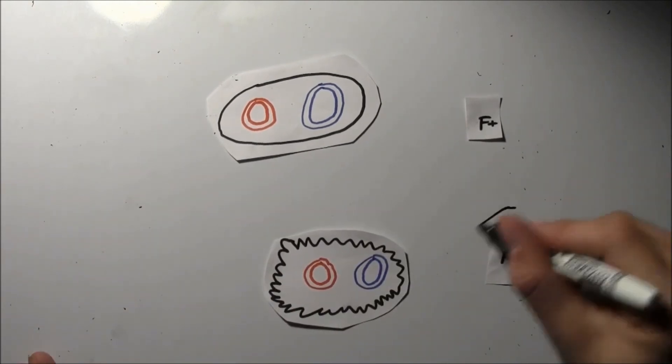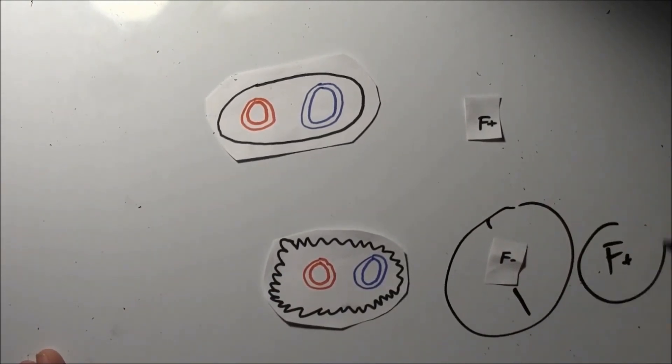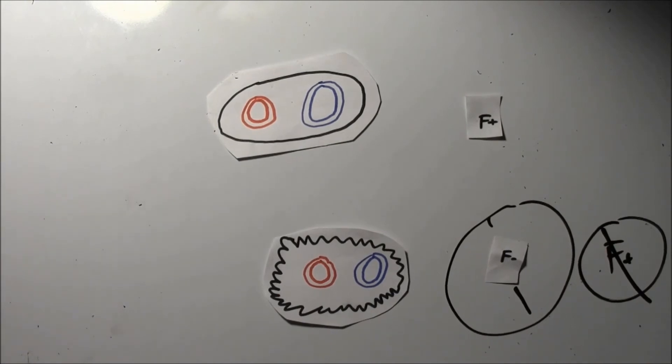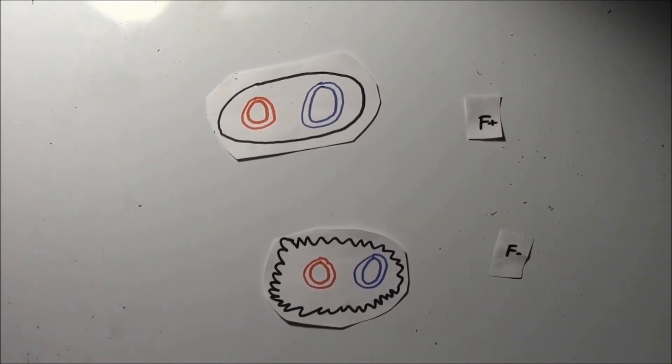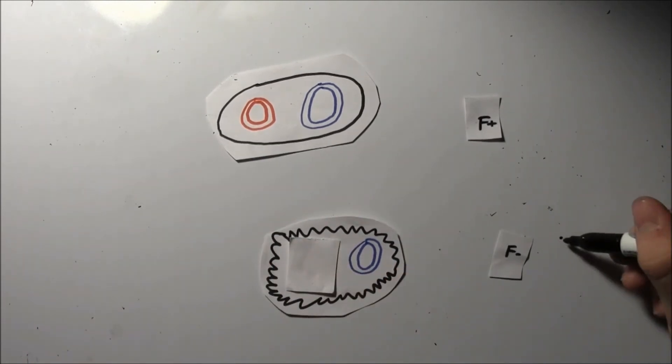The bacterial species or types are interchangeable and can conjugate with different species. However, there must always be one donor F-plus cell and one recipient F-minus, or conjugation will not occur. One cell must not have a plasmid F-factor so it can conjugate with the donor.